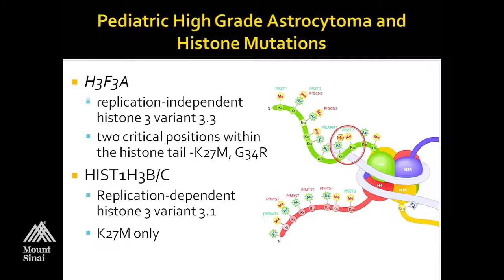Not reported in the initial paper, but subsequently reported by Susie Baker's group, was a second histone gene — histone H3.1 B or C — which encodes for a replication-dependent histone 3 variant 3.1. This gene only shows the K27M mutation, and these are largely found only in the brainstem, whereas the H3.3 mutations are found throughout the midline or the hemispheres.